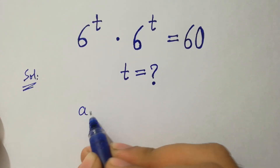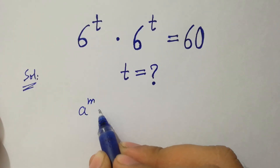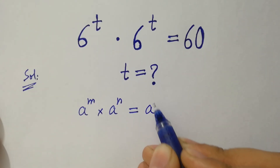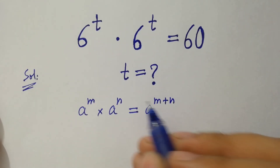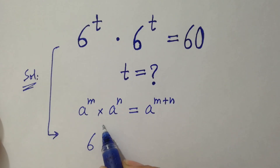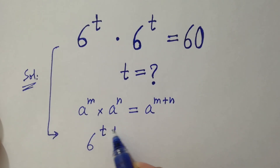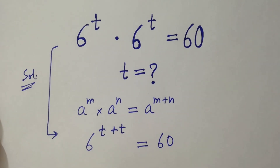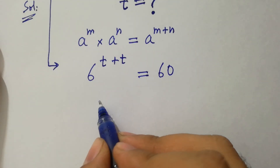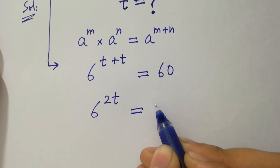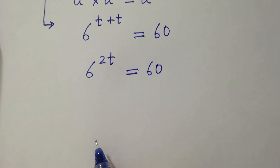Since a to the power m times a to the power n equals a to the power m plus n, then it will be 6 to the power t plus t equals 60. So 6 to the power 2t equals 60.